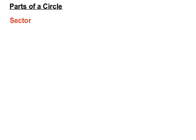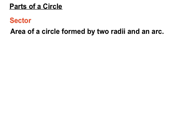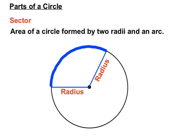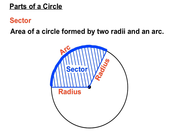We have a sector. It's an area of a circle formed by two radii — and that's just the plural of radius — and an arc. We've got one radius there and another radius there, and we've got the arc going around. That section of the circumference is an arc, shown in blue there, and together they form a section of the circle known as a sector.